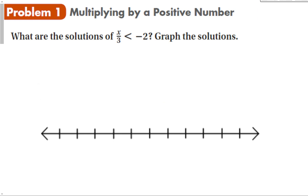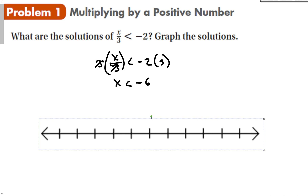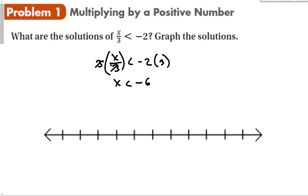That doesn't mean just because there's a negative number in the problem we have to flip the sign — we only do this when we're multiplying both sides by a negative number. For instance, when we solve x over 3 is less than negative 2, I'm going to multiply both sides by a positive 3. Those cancel out and I have that x is less than negative 6. My inequality did not change direction because I multiplied both sides by a positive number, even though there was a negative in the problem.